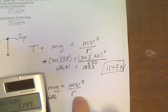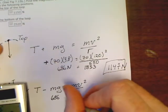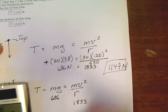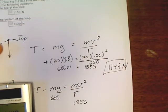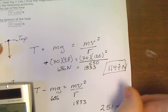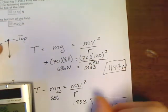And then on the bottom part, we're going to end up adding. So it's still going to be 1833. So 1833 plus 686, 2519 on the bottom.